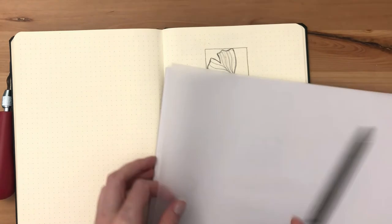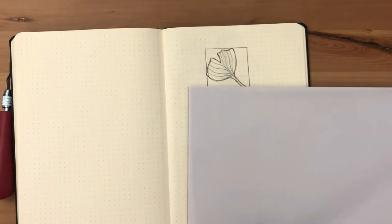Now you could draw this straight on the carving block but it'll be easier to draw it first and then use tracing paper to transfer it.